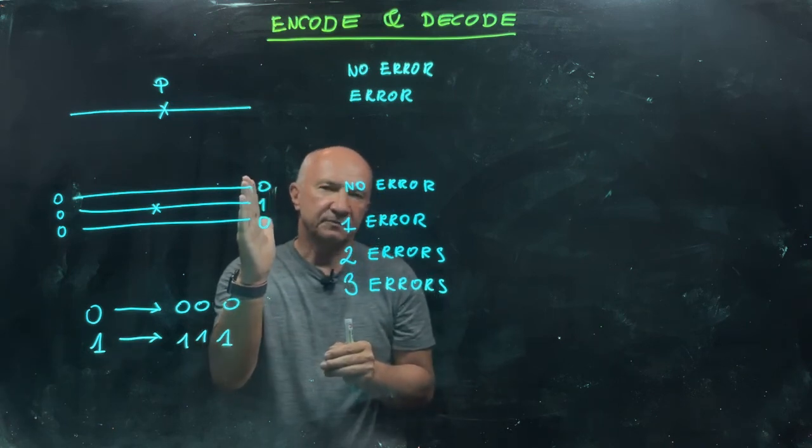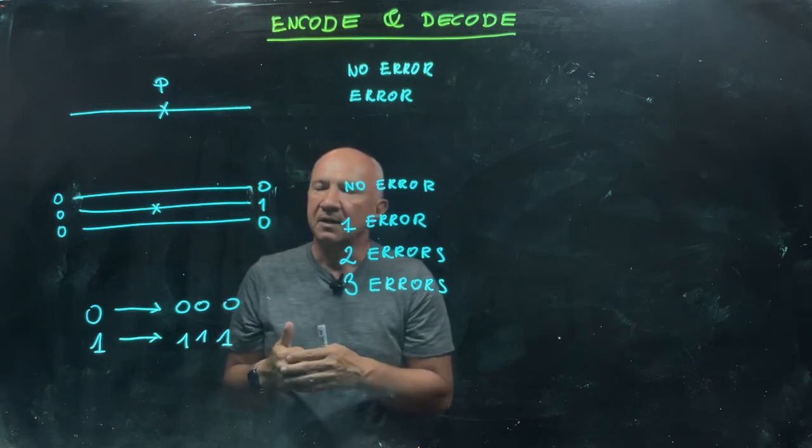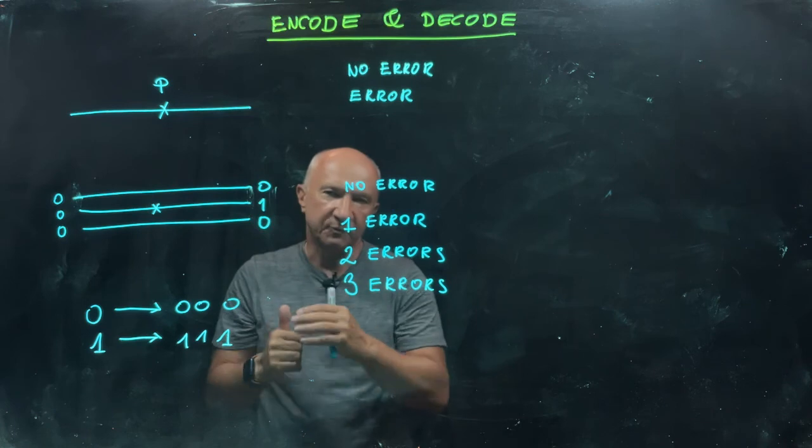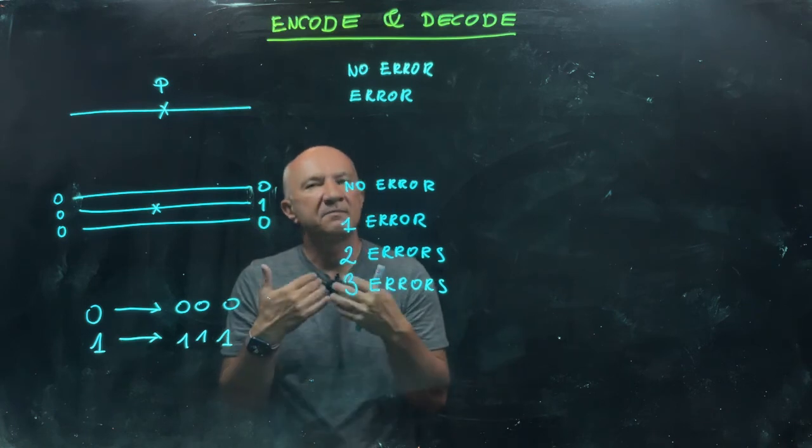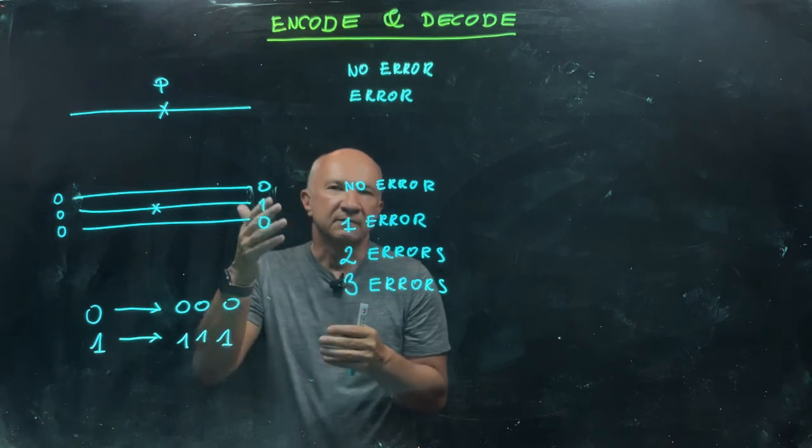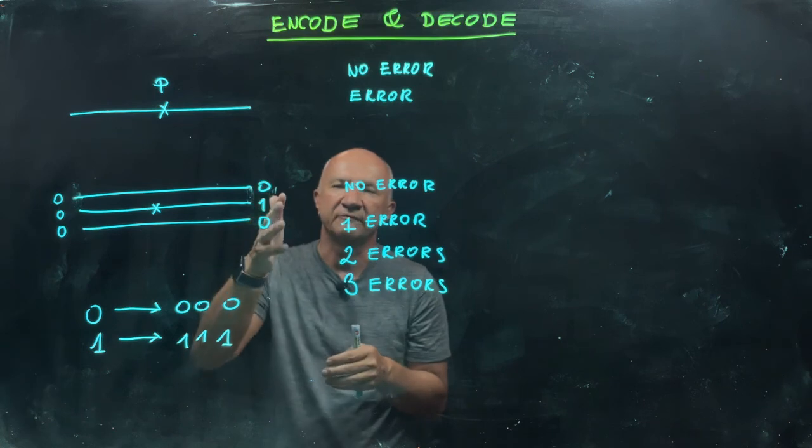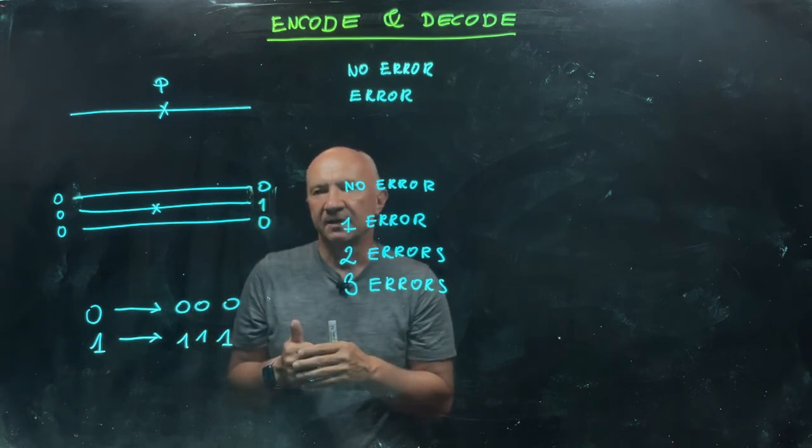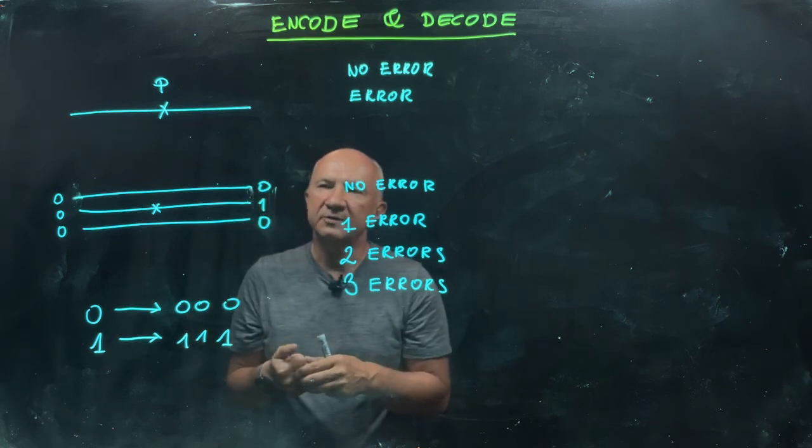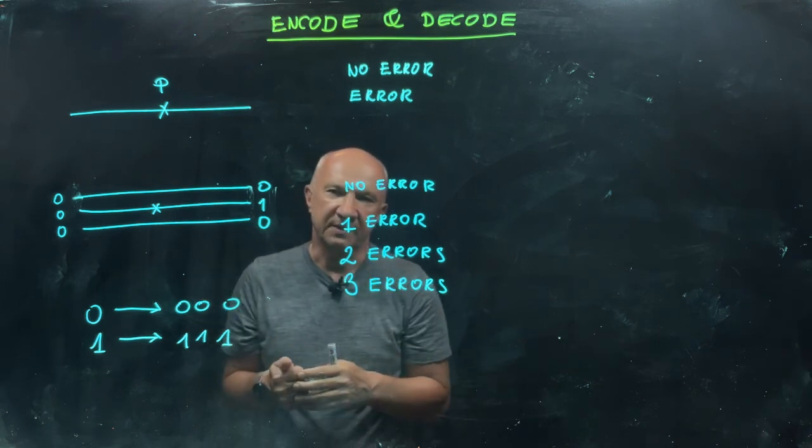The difference is that we now have a decoding scheme at the end of the channel. What we do is look at the output and take the majority of the digits as the original digit. We do this sort of majority voting rule.